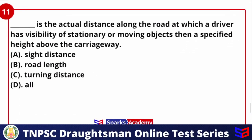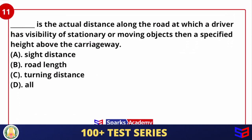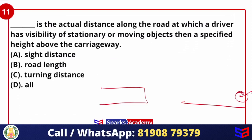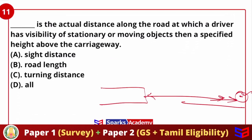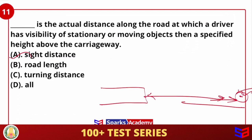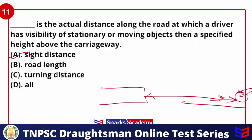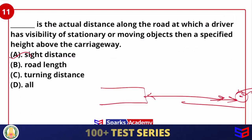Next question: the actual distance along the road at which a driver has visibility of a stationary or moving object at a specific height above the carriageway is called what? When a driver perceives an object, there is a minimum distance required to react and brake. That distance is called sight distance — which can be stopping sight distance or overtaking sight distance.